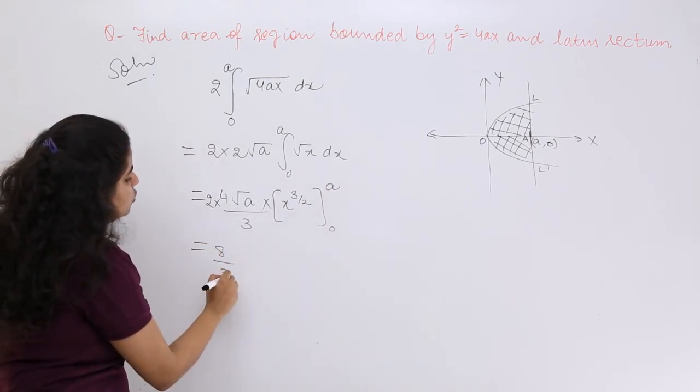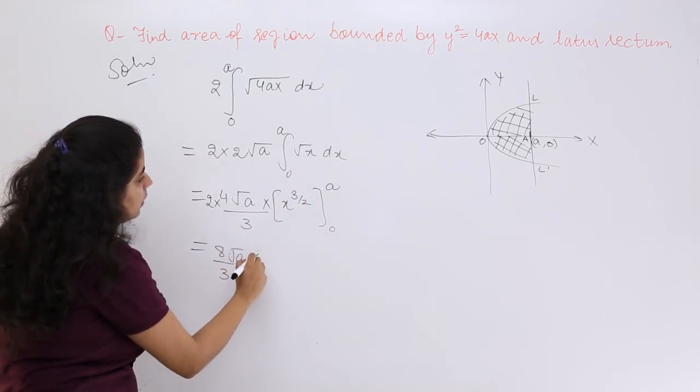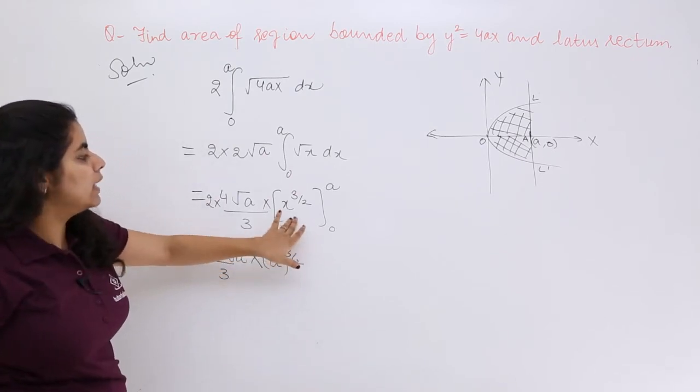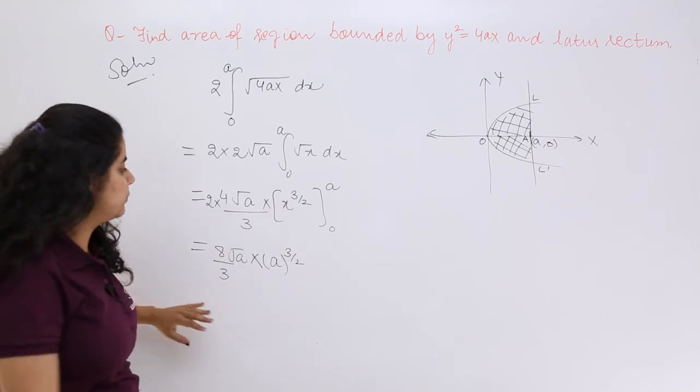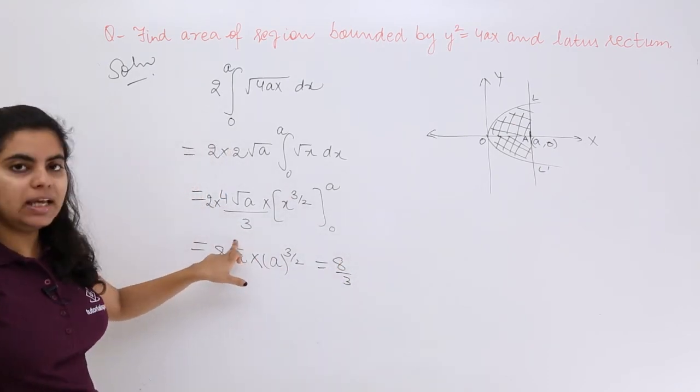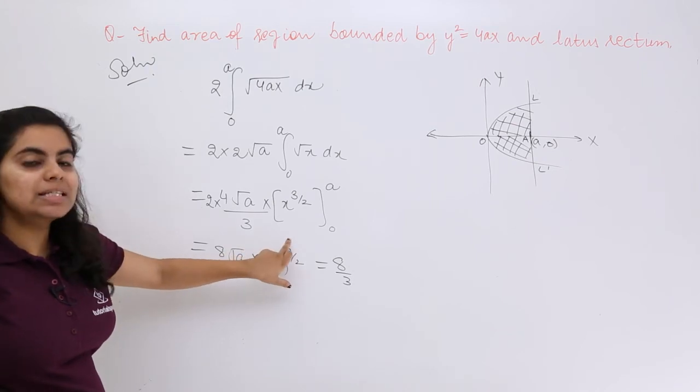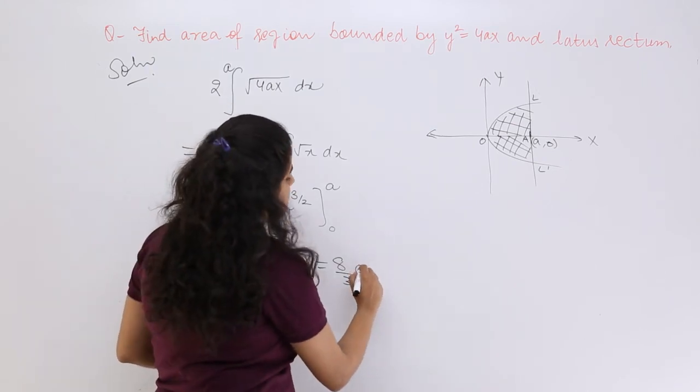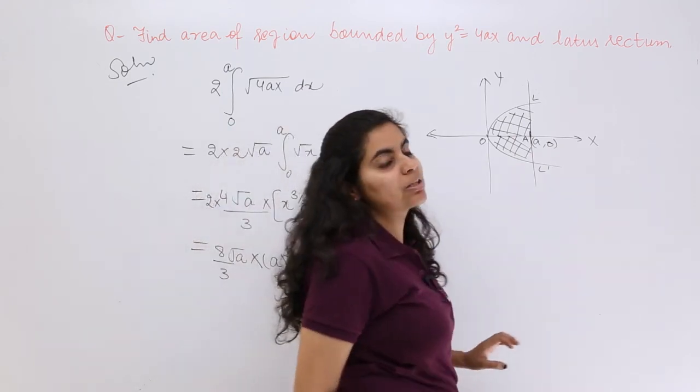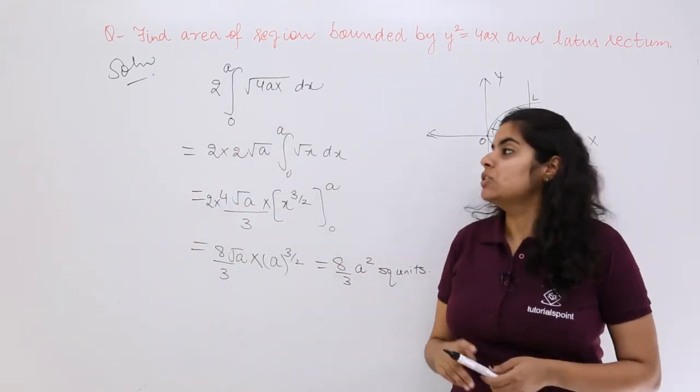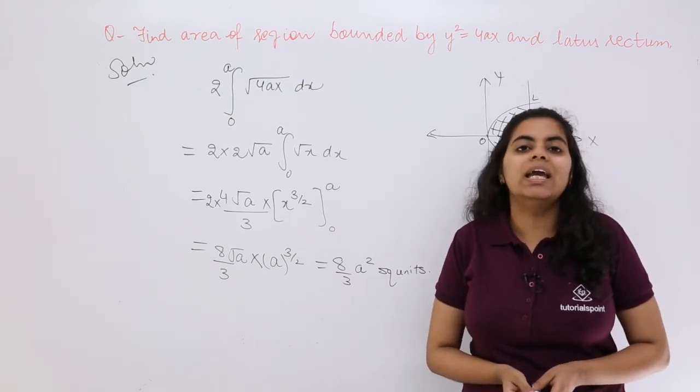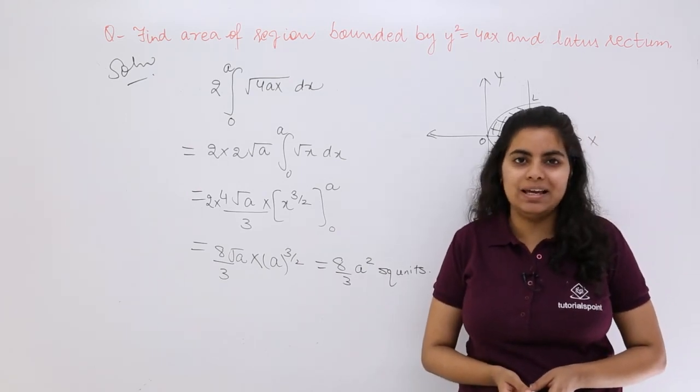What is the answer again? 8/3 √A multiplied by A^(3/2) minus 0, and all would vanish. So 8/3 A^(1/2) plus A^(3/2) which is A². Square units has to be written because it is the concept of area. So this NCERT book question has the answer 8/3 A² square units as the area.